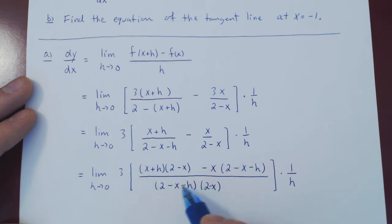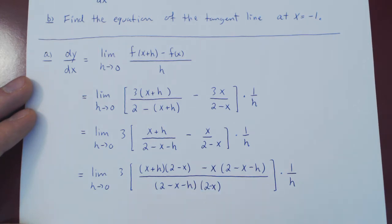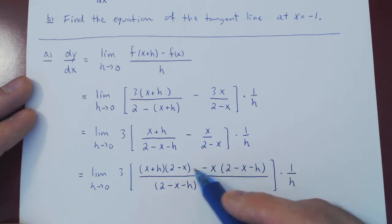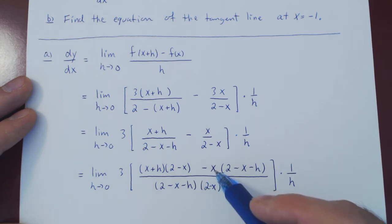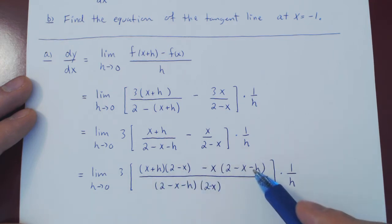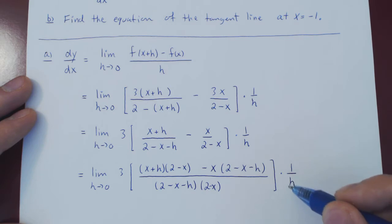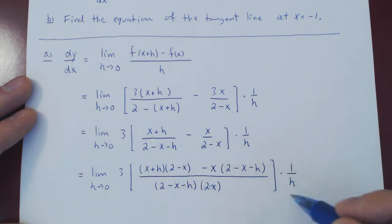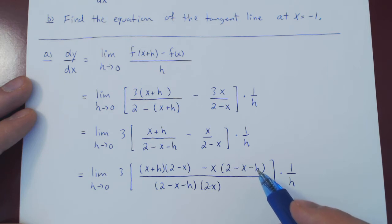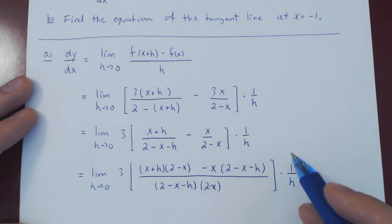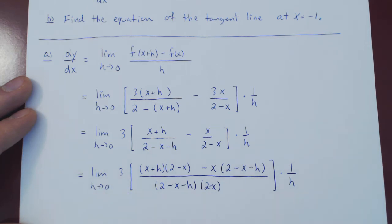If you look at your denominator, it is already fully factored: 2 minus x minus h times 2 minus x. You will never gain anything out of multiplying an expression that is fully factored, so you leave this factored. On the numerator — x plus h times 2 minus x minus x times 2 minus x minus h — because this is a minus, not a times, this is not fully factored. The only way to cancel out this 1 over h giving us a 1 over 0 term is to expand both of these. We'll cancel things out and be left with every term being multiplied by h. Once we factor it out, we'll have h over h which we'll cancel, and then we'll be able to let h tend to 0.